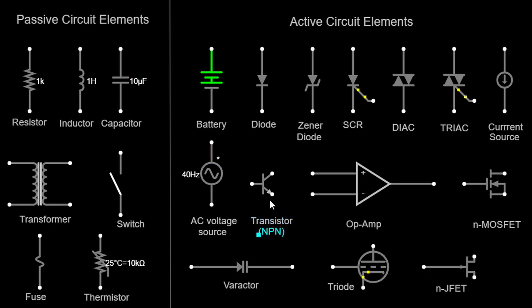Transistor NPN. A transistor is a three-terminal semiconductor device used for amplification and switching applications. An NPN transistor is one type of bipolar junction transistor (BJT), where the majority current carriers are negative charge carriers, electrons. It is represented by three layers with an arrow pointing inward on the emitter side.